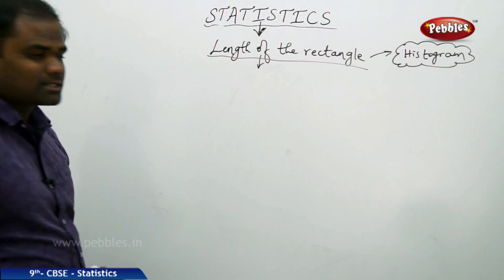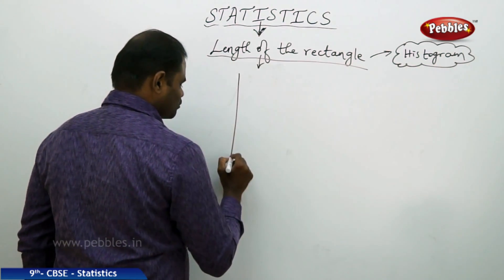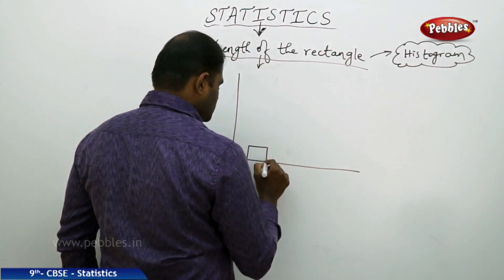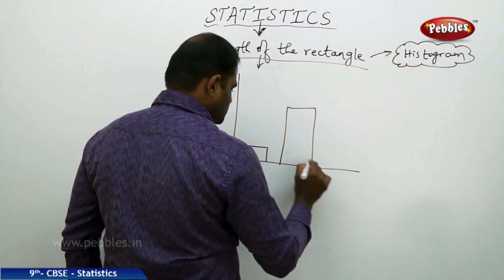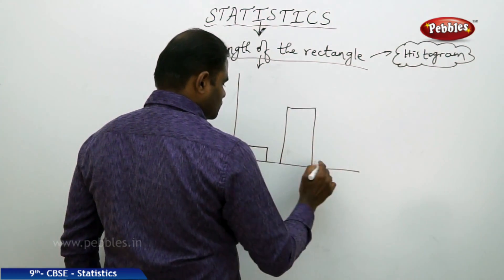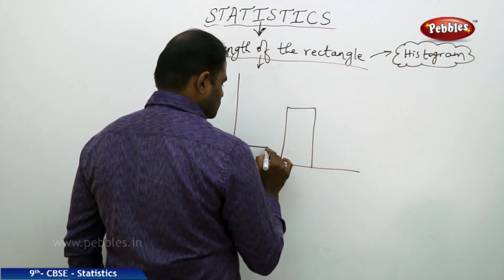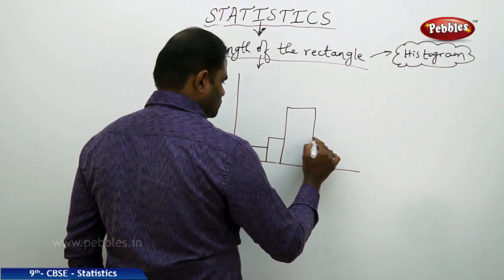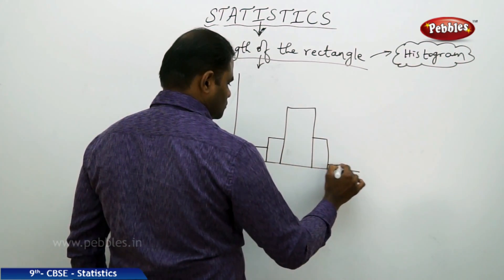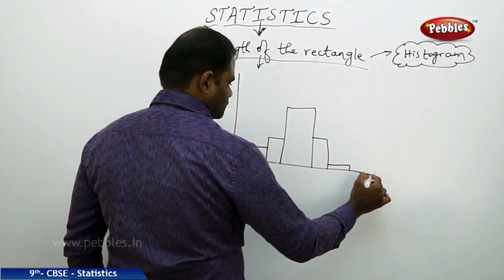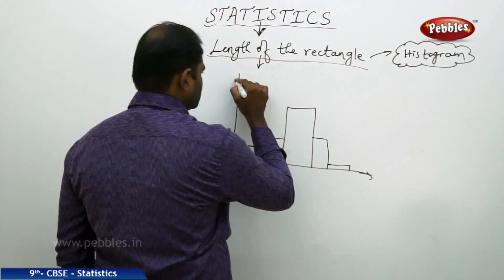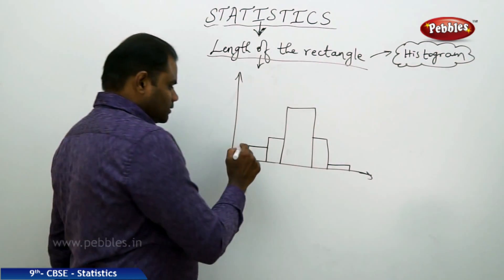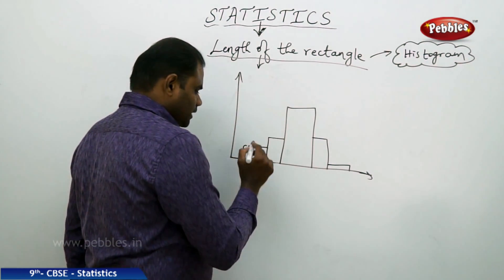As we have discussed about a histogram, it generally has all the rectangular bars. Now how do we calculate the length of each of these rectangles?